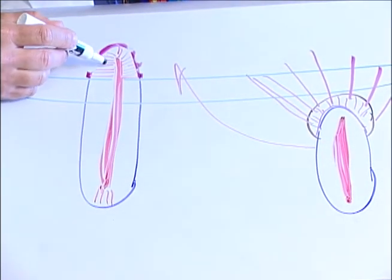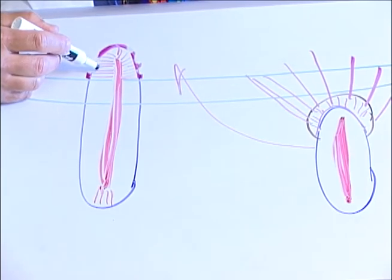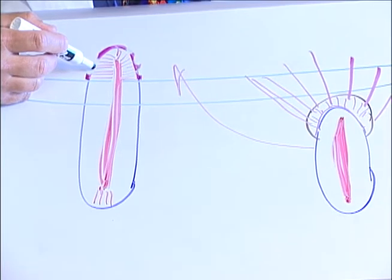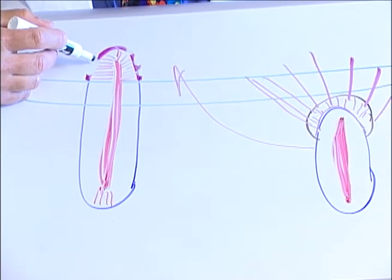First of all, each one of these little dentinal tubules contains a nerve ending. And each one of those nerve endings will fire every time the dog eats and drinks. Remember, their teeth are twice as sensitive as ours.